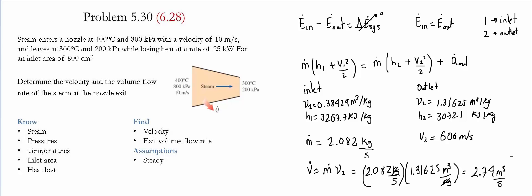Notice that in this nozzle the steam has different specific volume at the entrance and exit, therefore it is a compressible fluid. We also see that the velocity significantly increases from 10 meters per second to 606 meters per second, which proves the purpose of a nozzle: increasing the kinetic energy in the system.